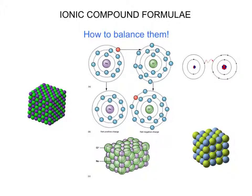Today we're going to look at balancing ionic compounds and how to make up their formulas. On this first slide you can see a few different examples of ionic compounds. In particular, note the center one — it shows the sharing of an electron between sodium and chloride, and this is what you need to keep in mind as we go through this whole process: you still have to be able to explain why these formulas are what they are.